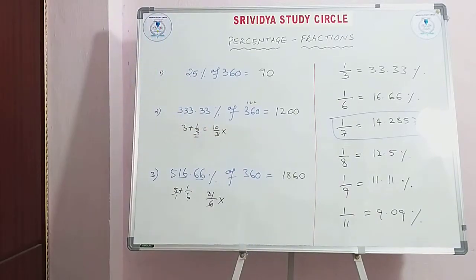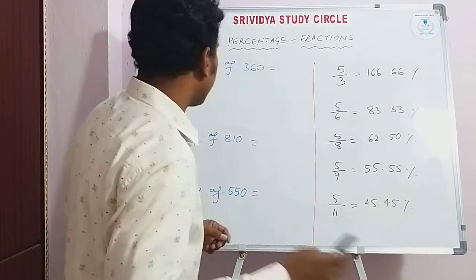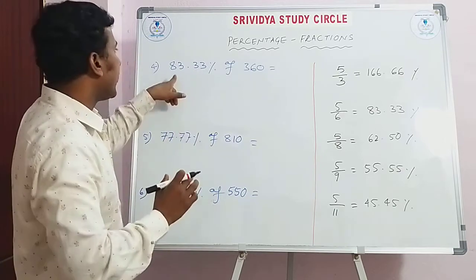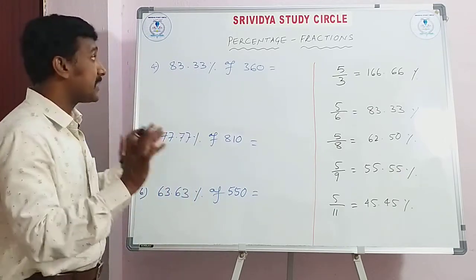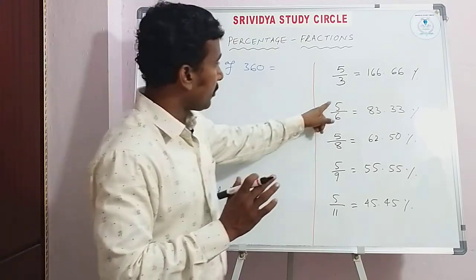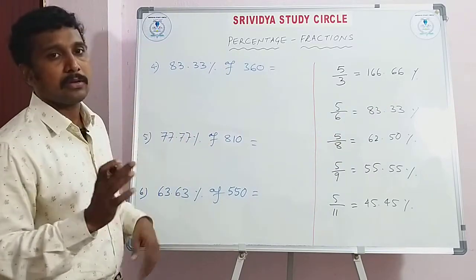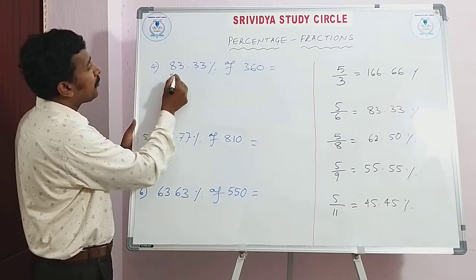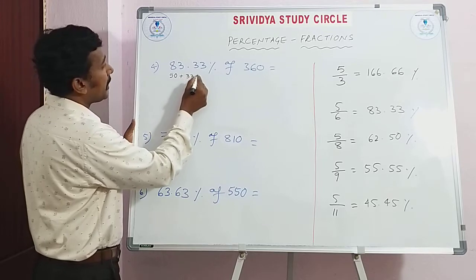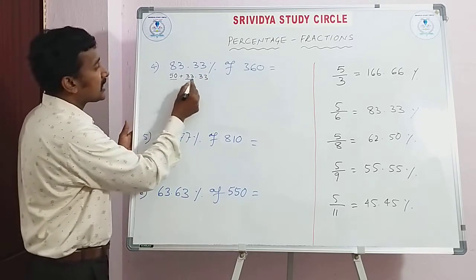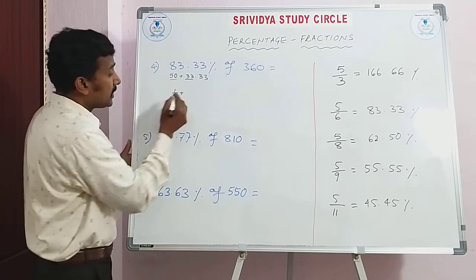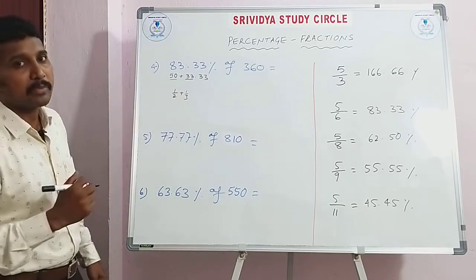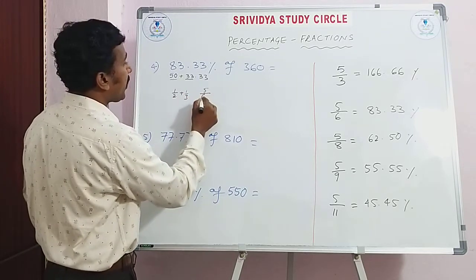Let's see a few more important examples. 83.33% of 360: if you remember, 83.33% equals 5/6. If you don't remember, split it as 50% + 33.33%. 50% means 1/2 and 33.33% means 1/3. LCM of 1/2 + 1/3 = 5/6. So 5/6 × 360 — 6 cancels into 360 sixty times, giving 5 × 60 = 300.